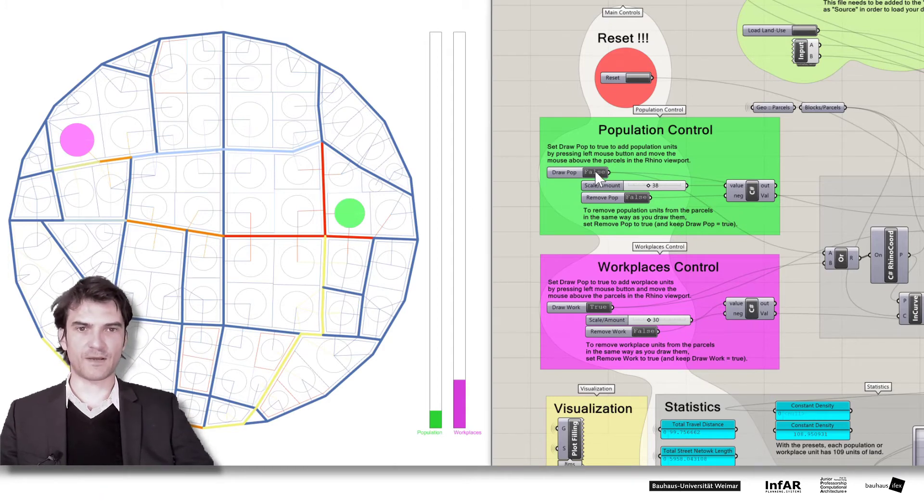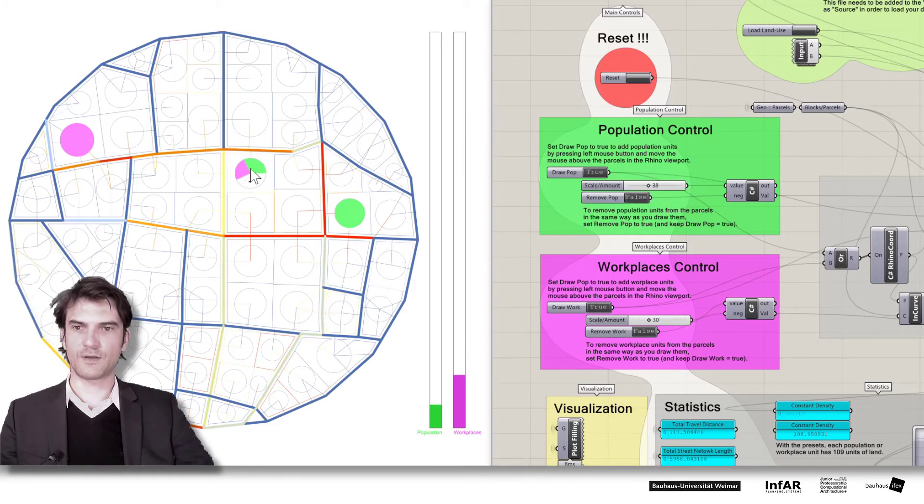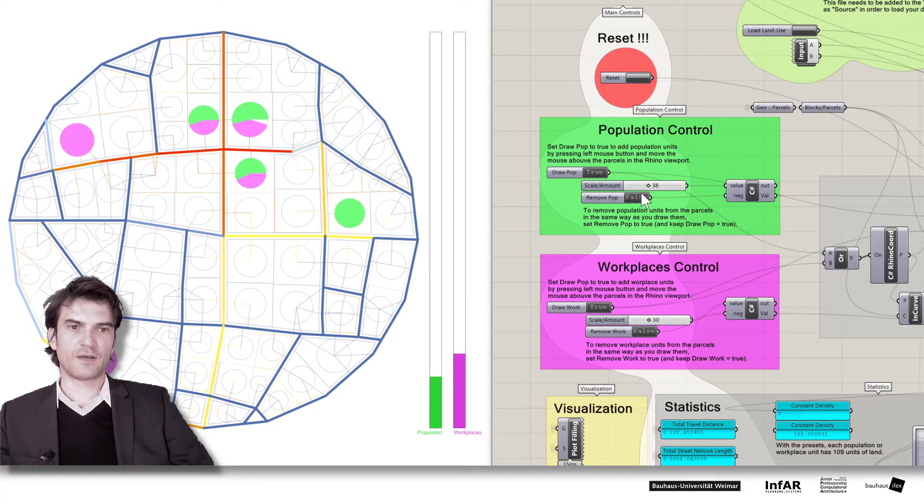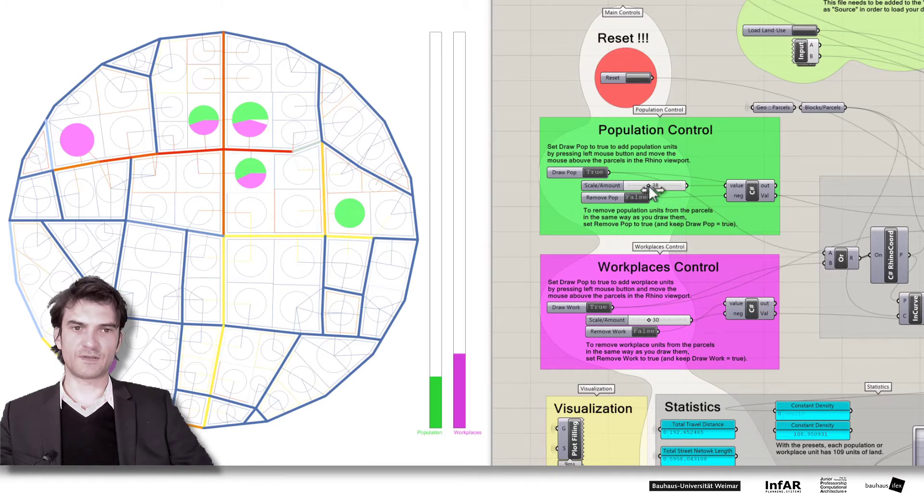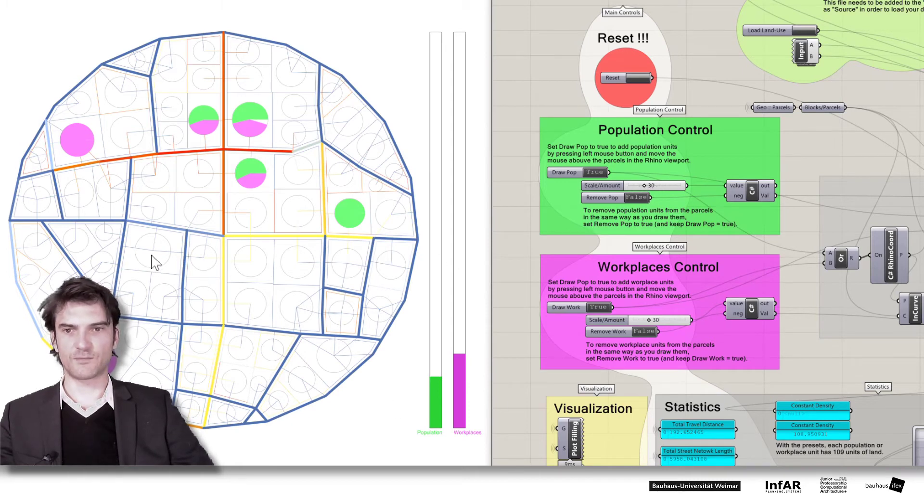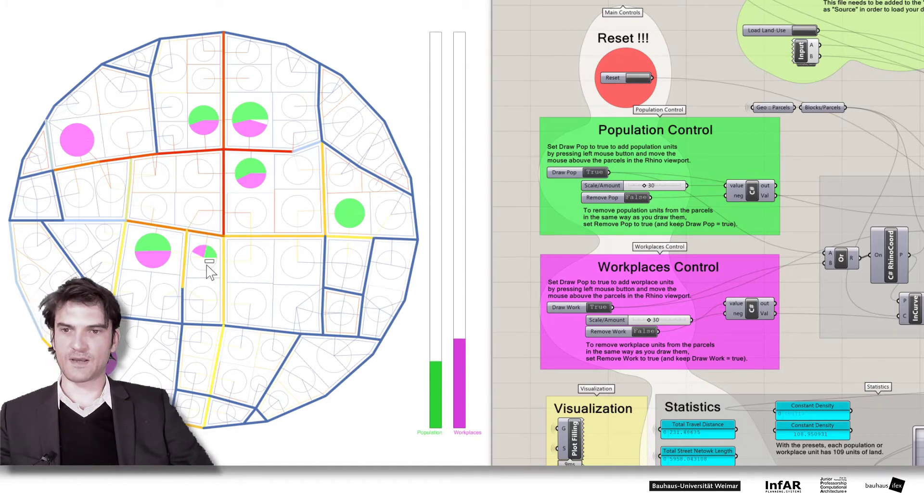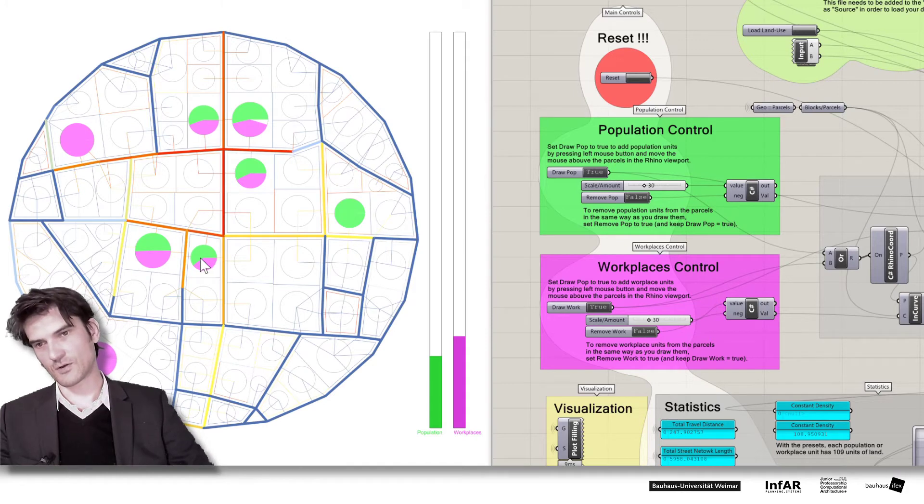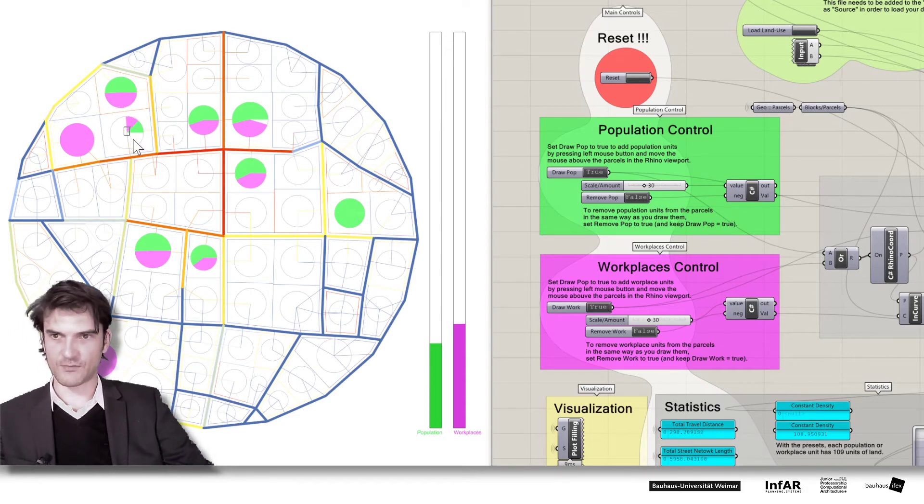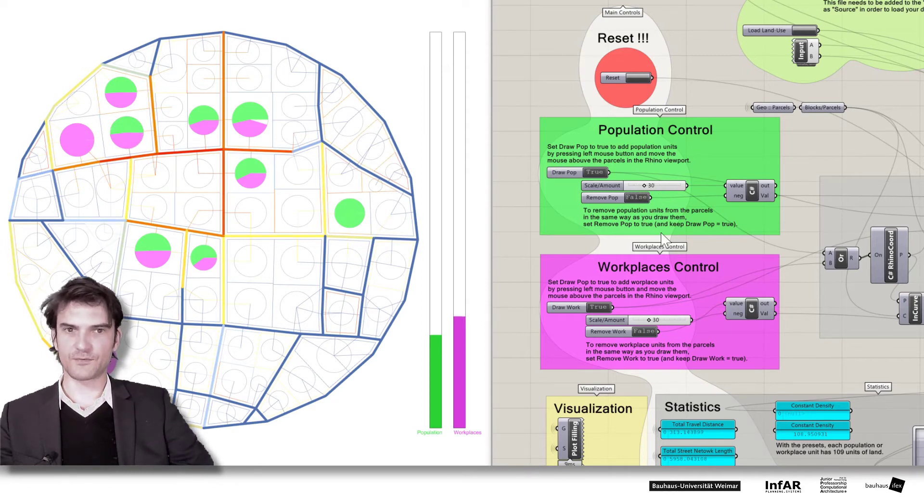Okay but now let's look back how we can draw units. You can also activate both to true. And then you can fill the plots with both of the land uses. And so how many you will distribute depends on these numbers. So we have 38 for the scaling of the population and 30 for the scaling of the workplaces. If we move both to 30, then we can distribute equal number of workplaces and residential units. So it's not always working correctly because depending on the speed of the mouse sometimes it's distributing first the population units and second the workplaces if you move too fast. But in general it should work that you equally distribute these land uses if you use the equal weighting.